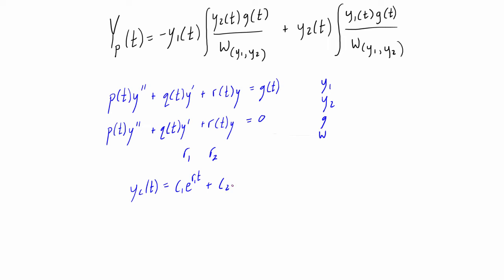And when these are real and distinct, the form would be c1*e^(r1*t) plus c2*e^(r2*t). Now if these were real and repeated or complex, the form would be a little bit different and we've gone over that in previous videos earlier in the course.